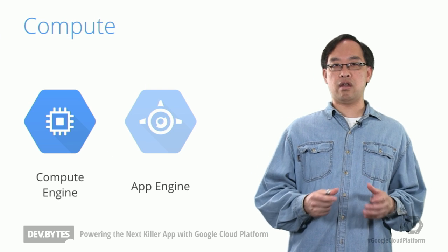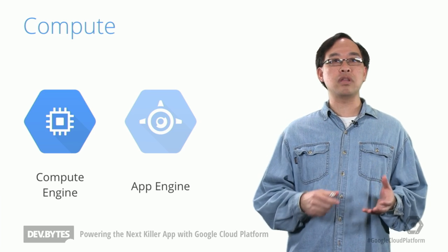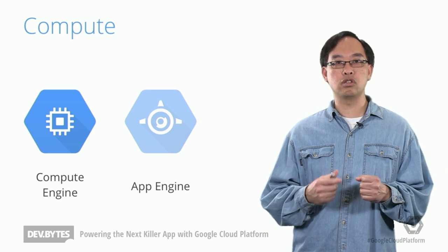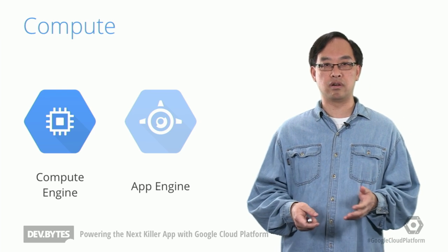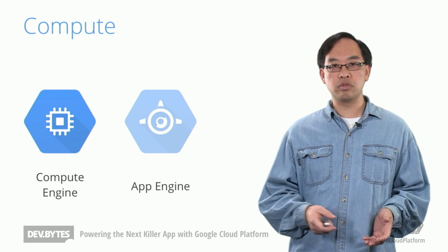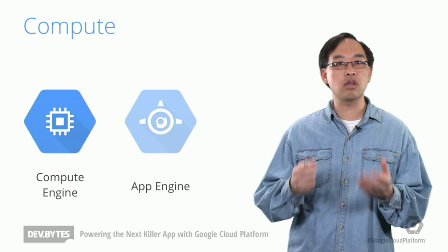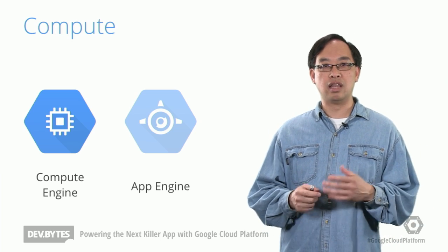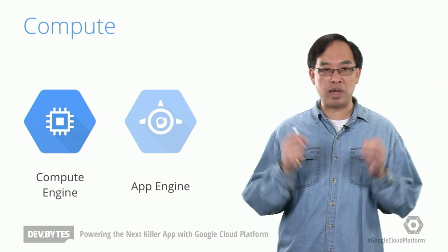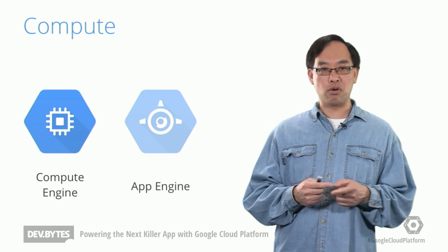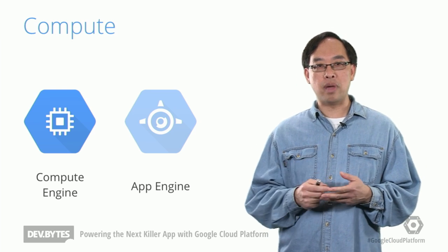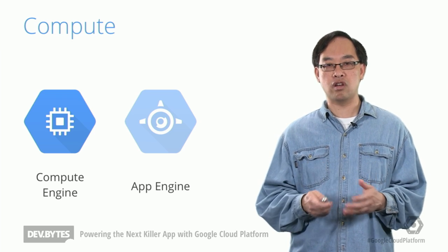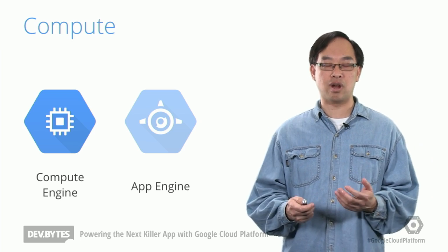We begin with the Compute category, where we've got Google App Engine and Google Compute Engine. Let's start with Compute Engine, our computing solution at the infrastructure as a service layer. Create Linux virtual machines and connect to them like any other network computer. They feature persistent disks with snapshotting, live virtual machine migration to get around those pesky maintenance periods, networking and firewalls, load balancing, and regional zones for high availability.